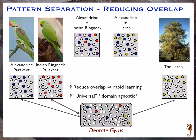The idea is that if you do this and reduce overlap, you can have rapid learning without interference. One of the ideas about the hippocampus in particular is that this may be a more universal or domain-agnostic way of operating — that it would separate along any dimension. All sorts of regions in the cortex do pattern separation: MT and visual cortex separates wonderfully in terms of the direction and velocity of motion, but the hippocampus will pattern-separate perhaps along any kind of dimension.